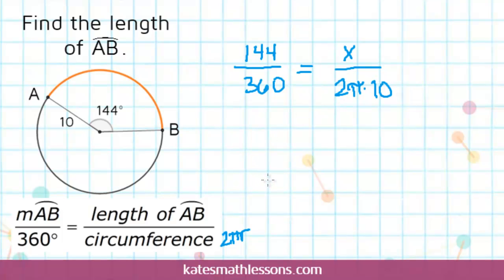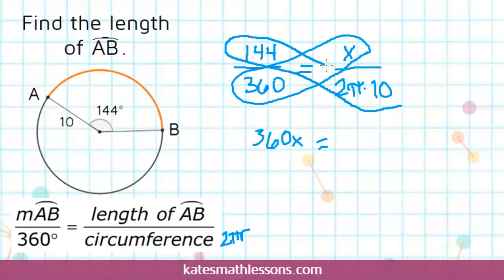Once you have your proportion set up, all you need to do is cross multiply. So we can do 360 times x, and write that first. And then that's equal to these two multiplied by each other. To leave your answer exact, you can leave the pi out and just multiply the other numbers together.